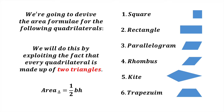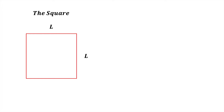We will begin with the easiest quadrilateral, the square, and end with the trapezium. We will begin with the trivial case of the square with side lengths L. First let's divide the square into two right-angled triangles as shown. This gives us two areas a1 and a2.